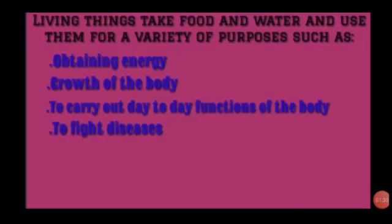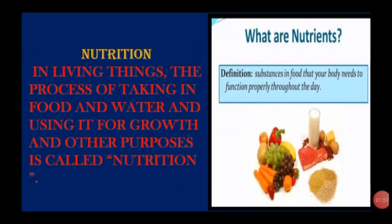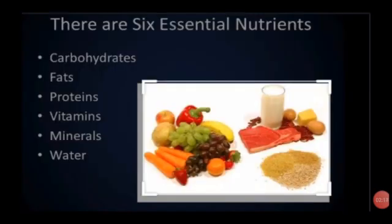Living things take food and water and use them for a variety of purposes, such as obtaining energy, growth of the body, to carry out day-to-day functions of the body, and to fight diseases. The process of taking in food and water and using it for growth and other purposes is called nutrition. There are six main nutrients in our food: carbohydrate, fat, protein, fiber, vitamins, and minerals. These nutrients are present in different food items we eat in differing proportions.